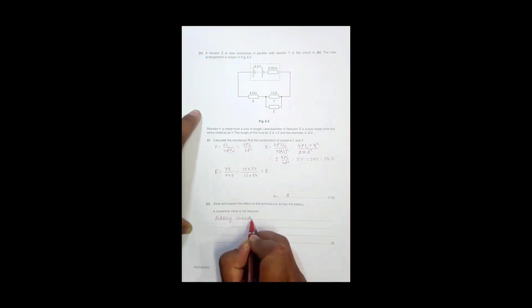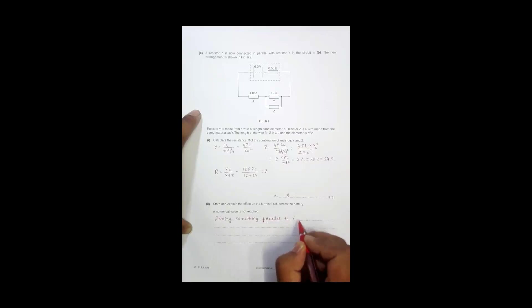Adding something in parallel to Y decreases the resistance there, which decreases the overall resistance of the circuit. This increases the total current.